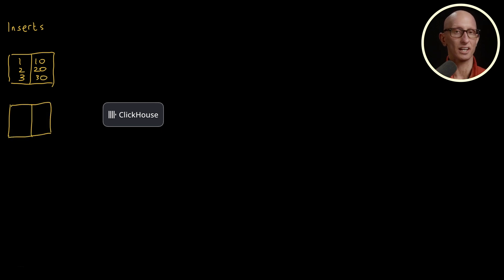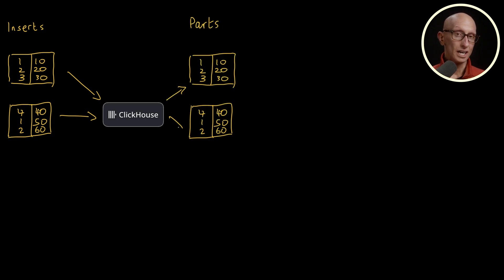And then we insert another batch of records after that one. Now ClickHouse creates parts from each batch of rows. In the background, our merge process kicks into action.